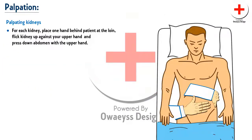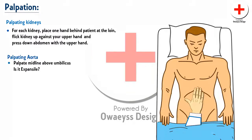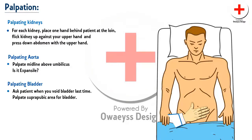For each kidney, place one hand behind the patient at the loin, flick the kidney up, and press down on the abdomen with the upper hand. For the aorta, palpate the midline above the umbilicus — is it expansile? For the bladder, ask the patient when they last voided and palpate the suprapubic area.